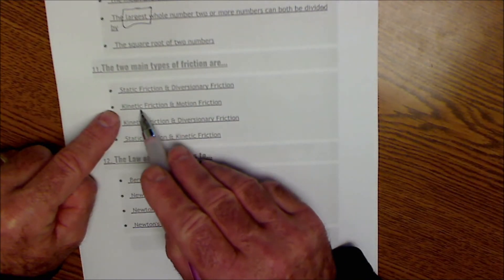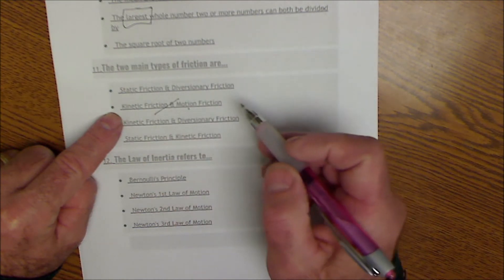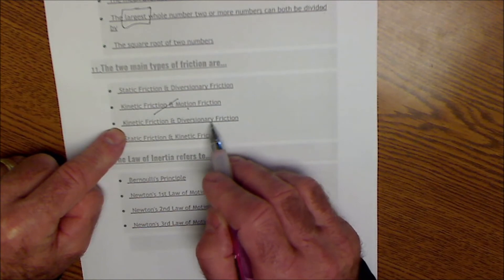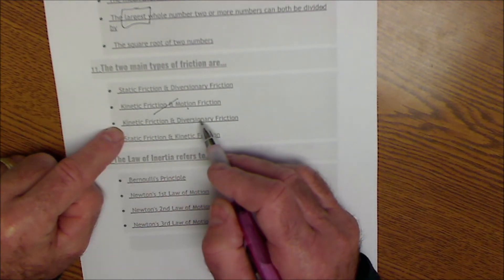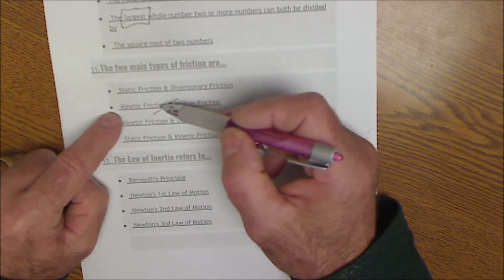Kinetic actually means motion. And static means stationary. So this means motion and motion. That doesn't even make sense, right? Motion and diversionary friction. I don't even know what that word means. It doesn't make sense either.